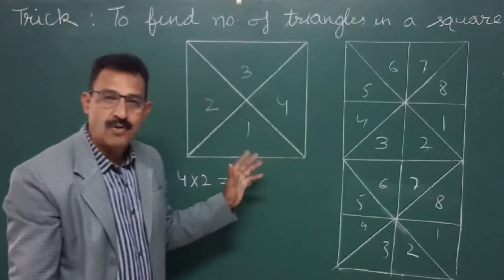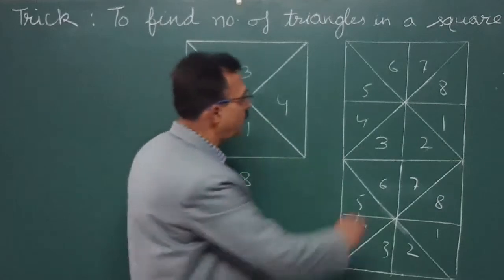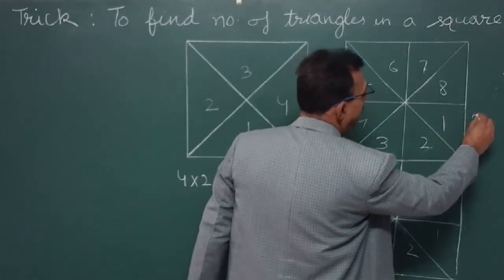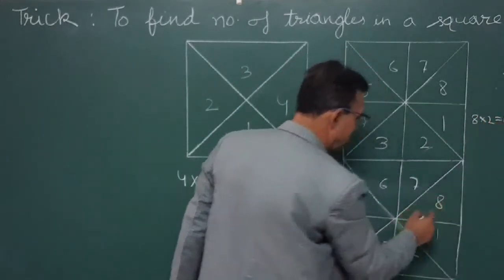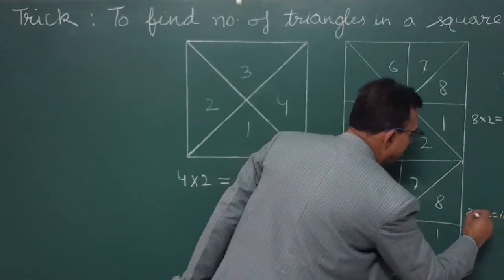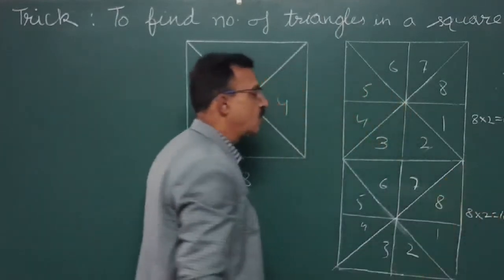We have two squares. We have one square, 8 into 2 is 16. We have another one, 8 into 2 is 16. So this is how we have 16.